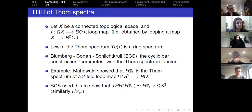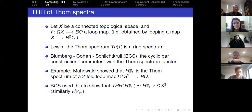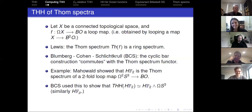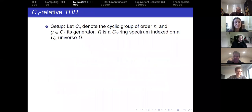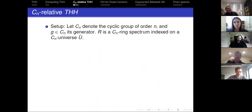Now I'll move on to CN relative THH. CN will denote the cyclic group of order N, and we're choosing a generator of CN — the same as choosing a way to include it into S1, the circle group. We take R to be a CN ring spectrum indexed on some universe, sometimes a complete universe but not necessarily.